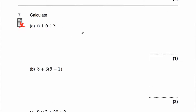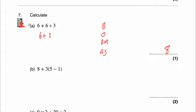Question 7a: work out 6 plus 6 divided by 3. Brackets — no. Orders — no. Divisions and multiplications — yes, there's a division. We do 6 divided by 3 first, which is 2. Then 6 plus 2 is 8. Our answer is 8.